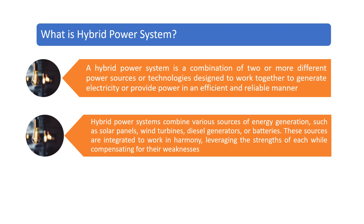Hybrid power systems combine various sources of energy generation, such as solar panels, wind turbines, diesel generators, or batteries. These sources are integrated to work in harmony, leveraging the strengths of each while compensating for their weaknesses.